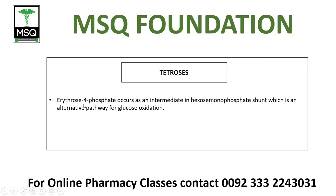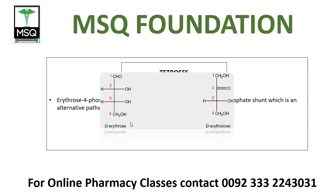Tetrose mein erythrose-4-phosphate occurs as an intermediate in the hexose monophosphate shunt, which is an alternative pathway for glucose oxidation. If you look at erythrose, first carbon, second carbon, third carbon, and fourth carbon — the first carbon with double bond oxygen has an aldehyde group. If the carbon double bond with oxygen is in the middle, we will have a ketone group.